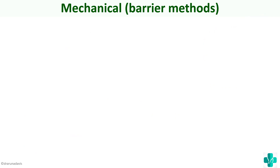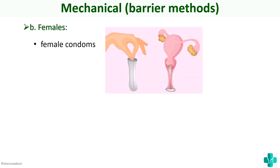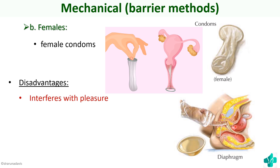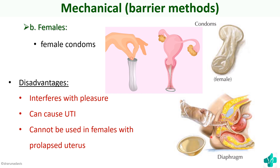For females, we have female condoms which can be inserted into the vagina. The advantages are similar to male condoms. Disadvantages are that it can interfere with pleasure, it can cause urinary tract infection due to female anatomy, and it cannot be used in females with a prolapsed uterus.